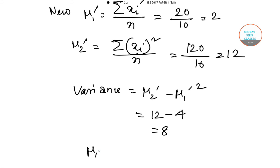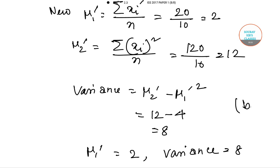So mu 1 dashed equals 2 and new variance equals 8. Our answer is option B, where mean is 2 and variance is 8. So for question number 26, B is the correct option.